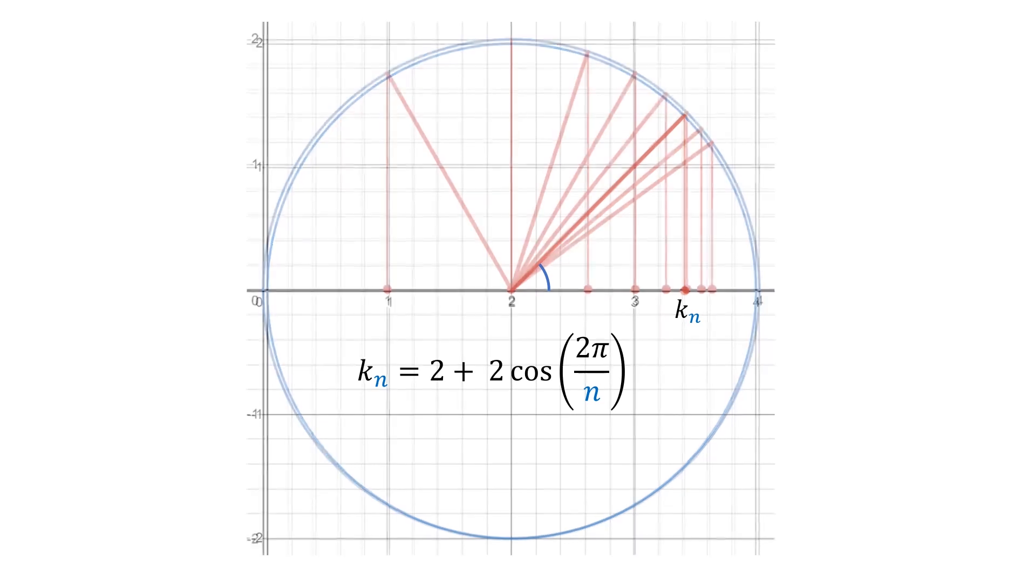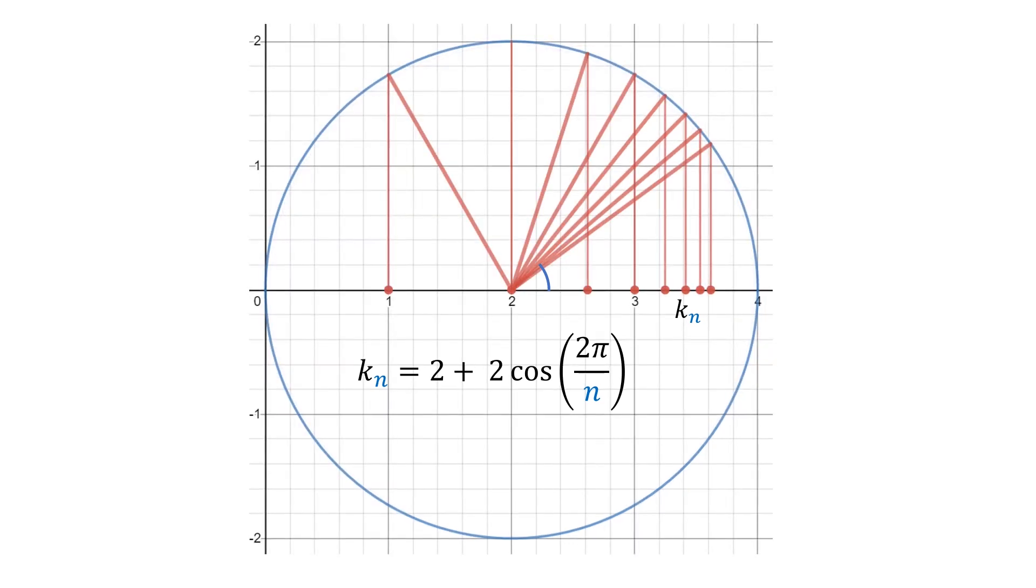So, there you have it. The values of k to obtain a period of n are 2 plus 2 cosine of 2π over n. But more than the pretty result is the surprising structure underneath if we just frame it in the right light.